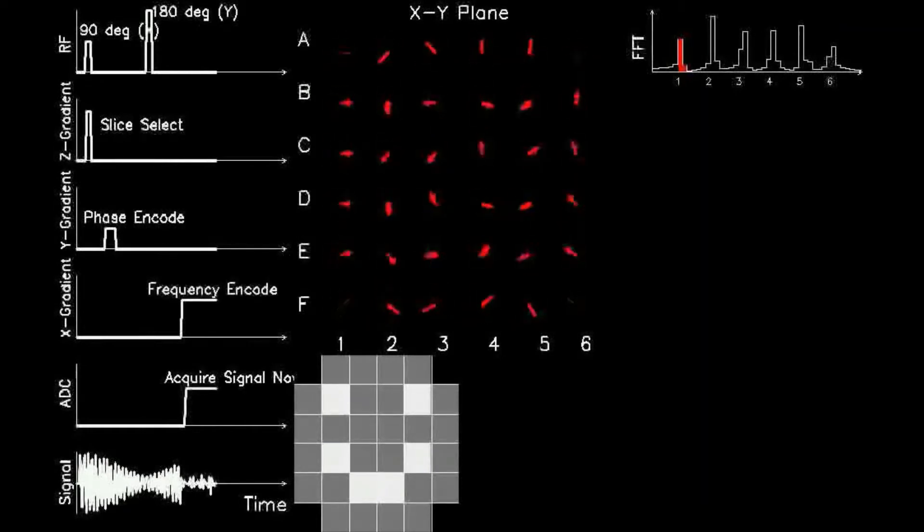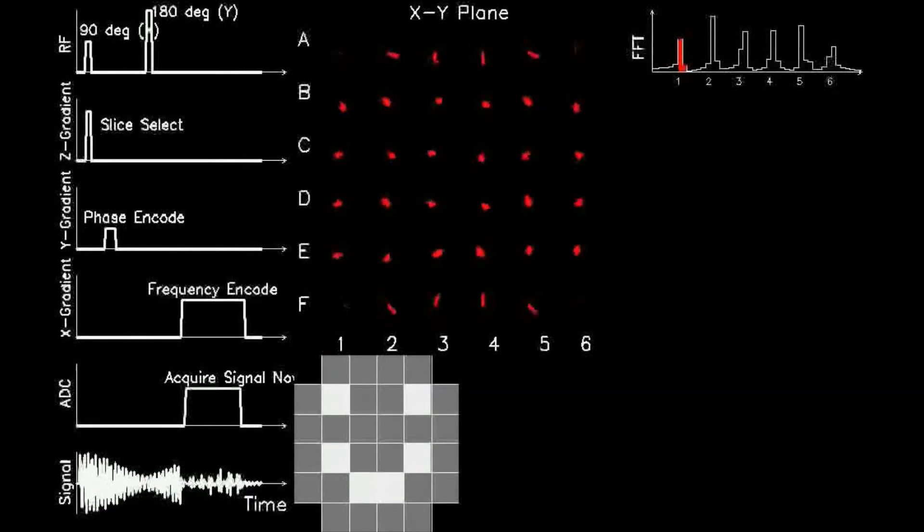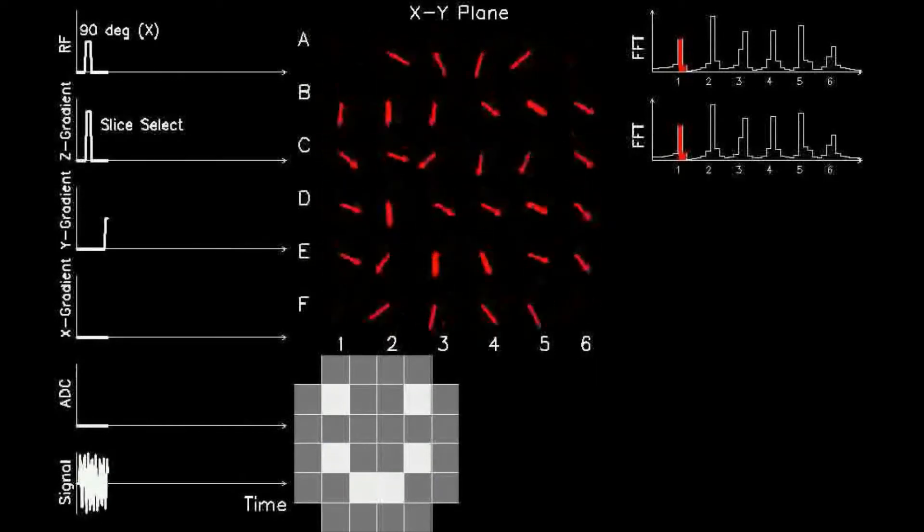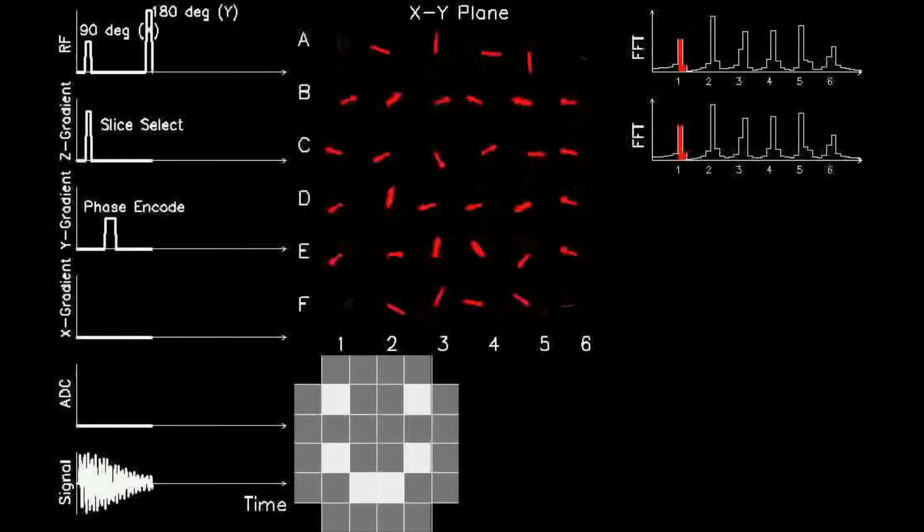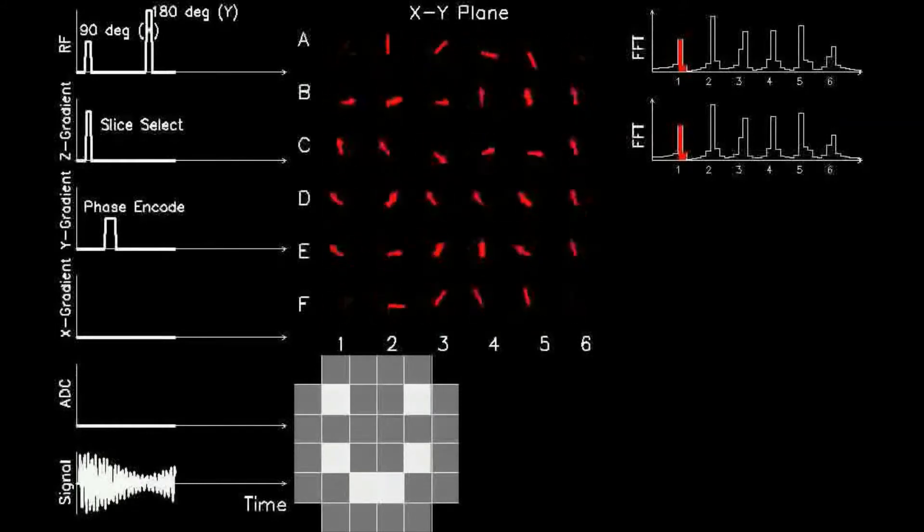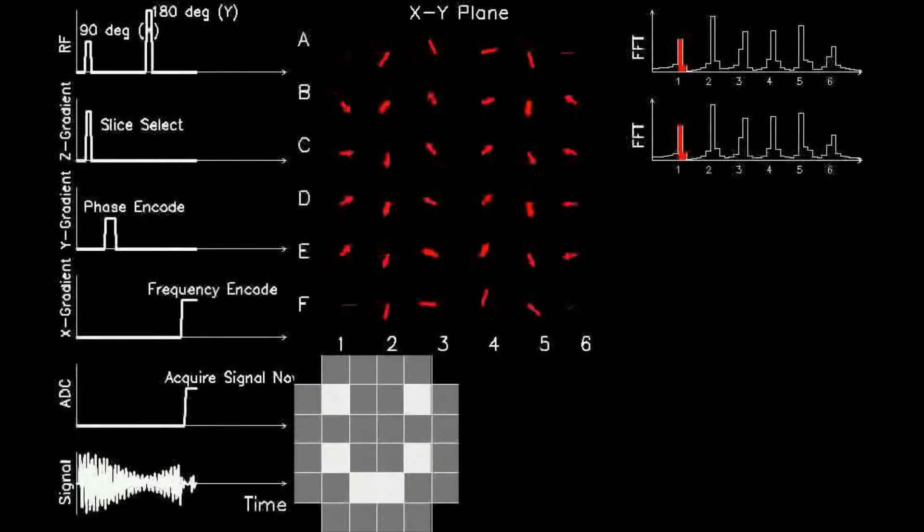The top showing the RF power for the 90 degree and 180 degree spin flips, the next showing the Z gradient for slice selection, the next showing the Y gradient for phase encoding, the next showing the X gradient for frequency encoding, and the next showing the time window of signal acquisition, and finally the bottom showing the continuous signal received.